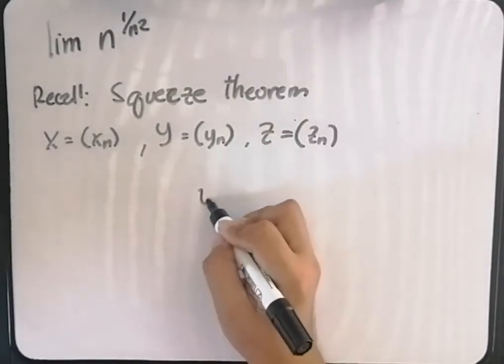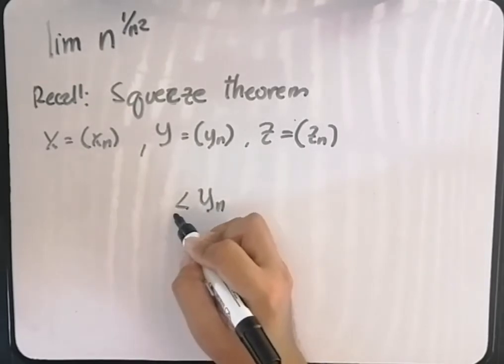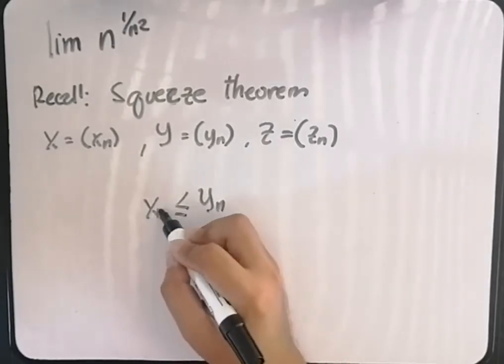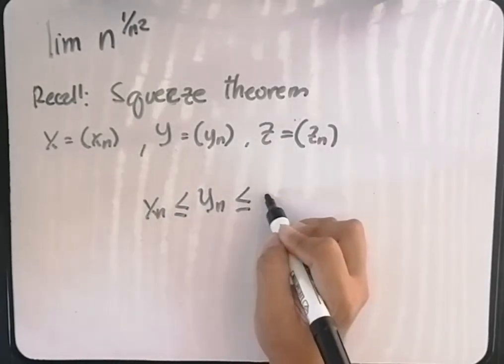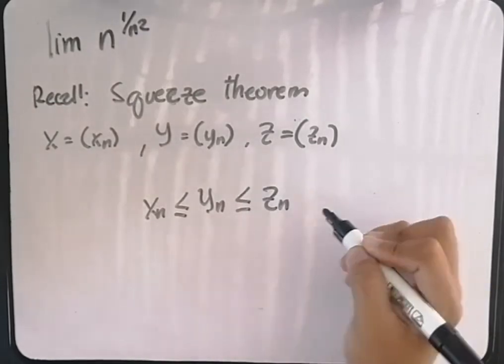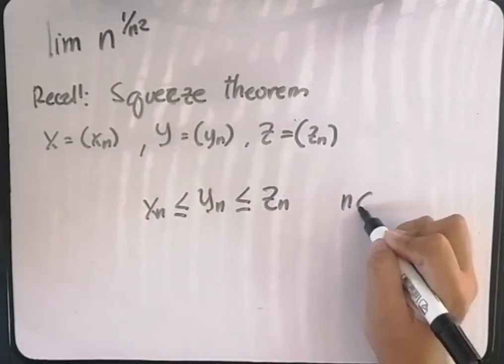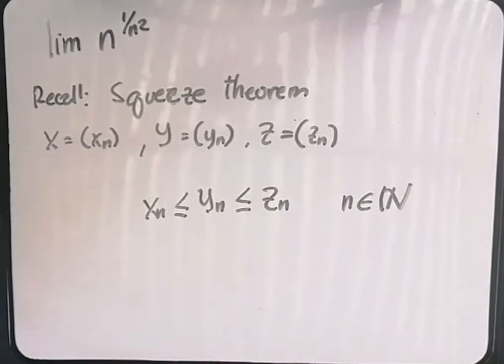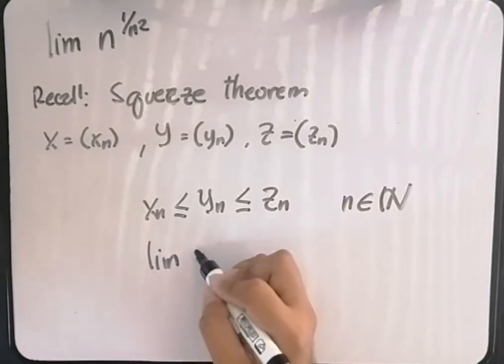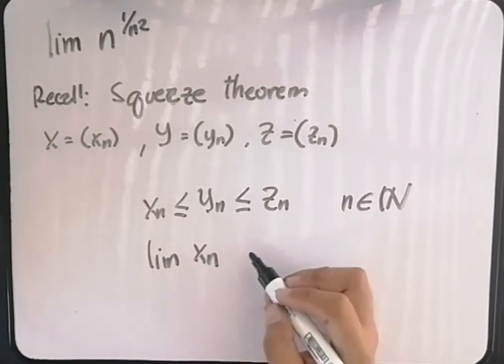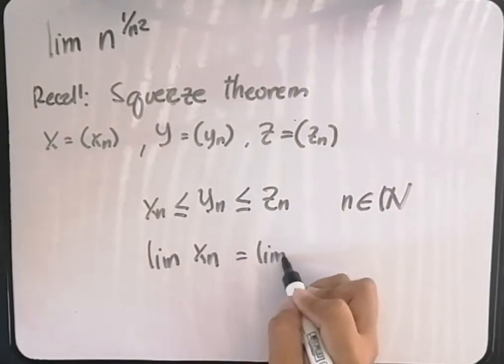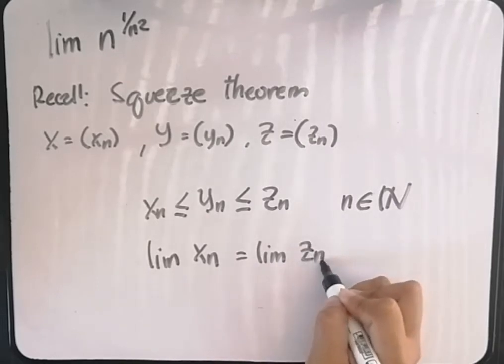Such that y sub n is greater than or equal to x sub n, but less than or equal to z sub n for all n element of the set of natural numbers. And the limit of x sub n is equal to the limit of z sub n.